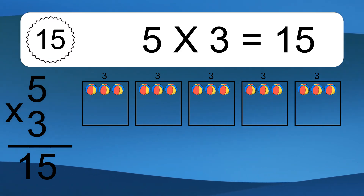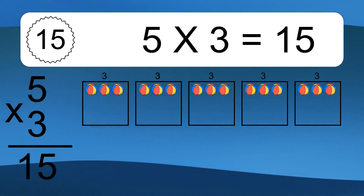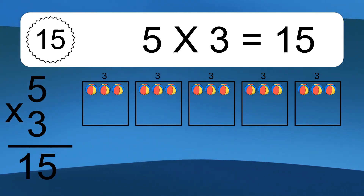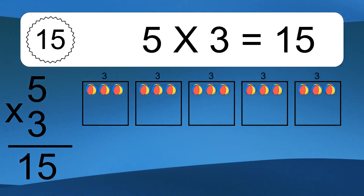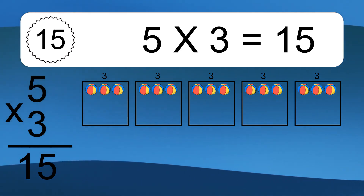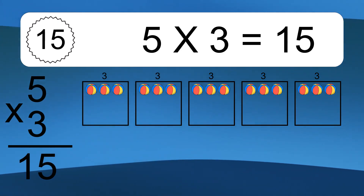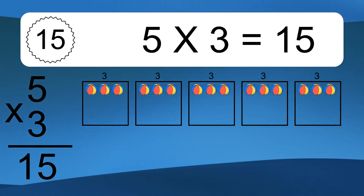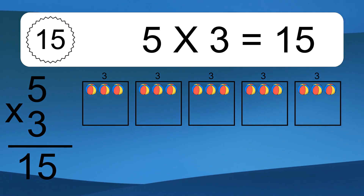5 times 3 equals what? 5 times 3 equals 15. We have 5 boxes, and each box has 3 colorful balls inside. If you count all the balls in all the boxes together, you will have 5 times 3 balls.